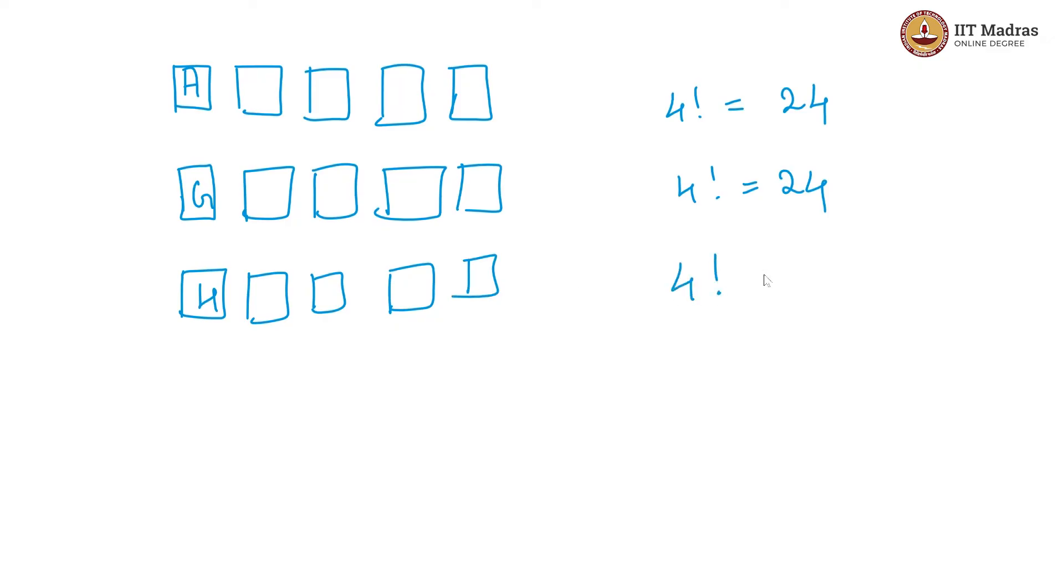Which again gives us 4 factorial. So again 24. So so far till this point we have seen 72 words, which means the next one in order is the 73rd word. And what is the next one in order? It has to start with P.